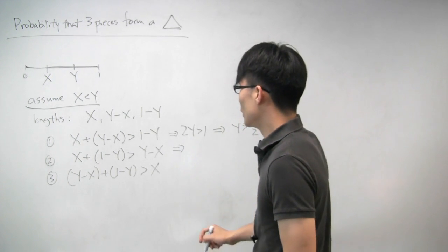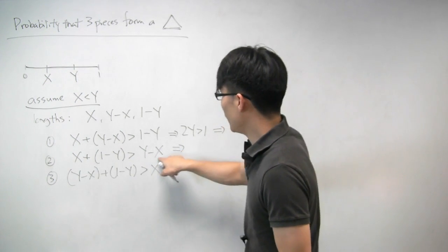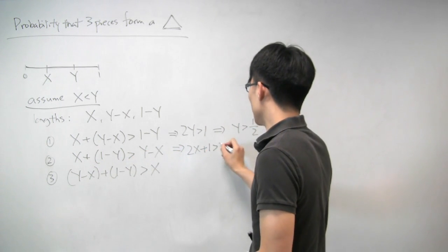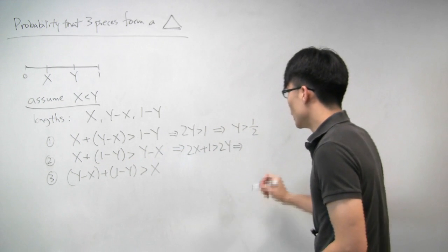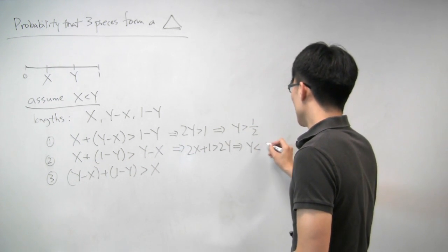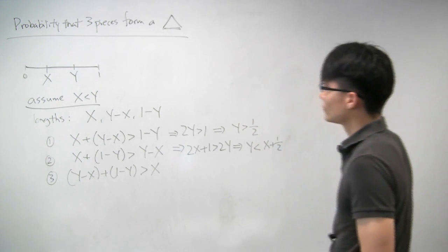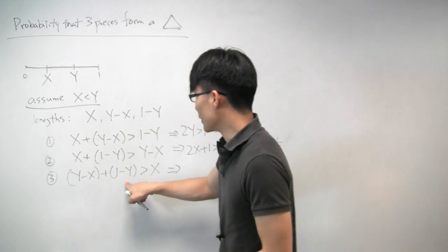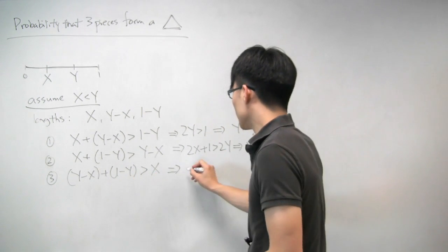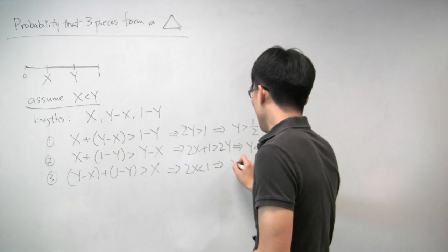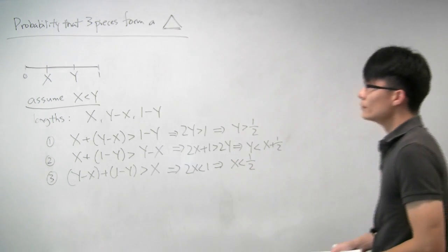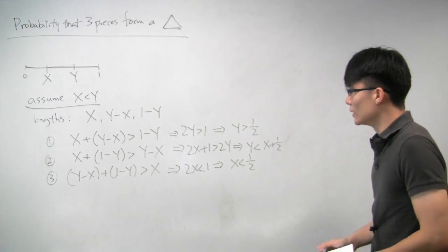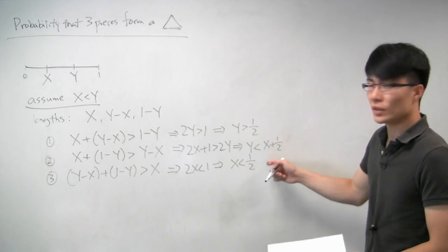For the last condition: (y minus x) plus (1 minus y) has to be greater than x. The y's cancel and we're left with 2x less than 1, or x less than one half. So our three conditions are: y greater than one half, y less than x plus one half, and x less than one half.